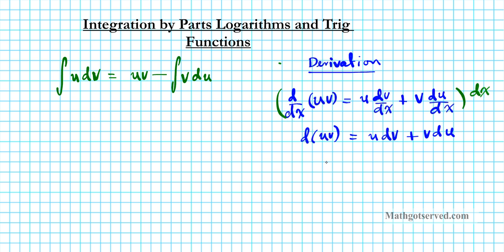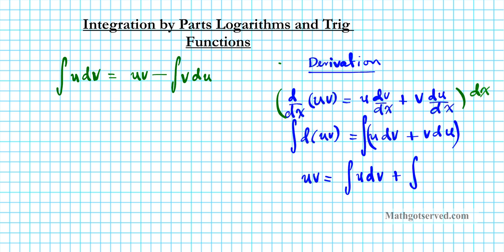We're going to find the indefinite integral of both sides of this expression. The antiderivative and the derivative are inverse operations, so if you take the integral of the derivative of an expression, you end up with that expression — these two cancel each other out. We just have uv on the left side, and the right side becomes the integral of u dv plus the integral of v du.